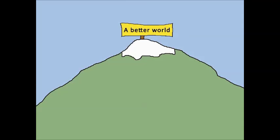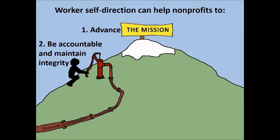Here's a visual metaphor for nonprofits and how they're governed. We have a mountain, and the mission of an organization — in various forms, creating a better world — is at the top. Our job as a nonprofit is to work toward that mission and wind our way up the mountain. I want to ask four questions about worker self-directed nonprofits: are they more effective at advancing the mission, being accountable and maintaining integrity, being stable and resilient, and being good to employees? A lot of nonprofit law revolves around not how we advance the mission, but how we prevent people from exploiting the resources of the nonprofit.